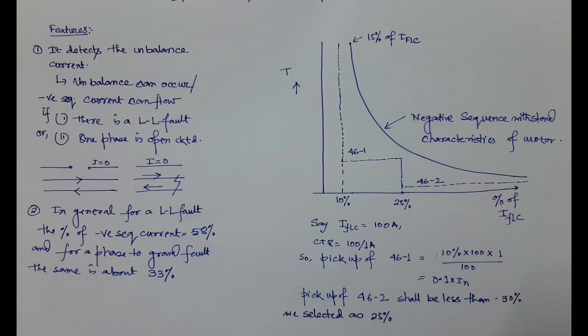Since 15% of full load current is the starting point of the withstand graph, the motor can withstand negative sequence current continuously when it is less than 15% of full load current. We assume that element 46-1 picks up at 10% of full load current and is used for alarm. For calculation simplicity, we assume the full load current is 100 A and the CT ratio is 100/1 A. So the pickup of 46-1 is 10% of 100 A, which is 0.1 × In.